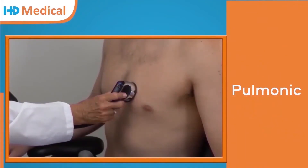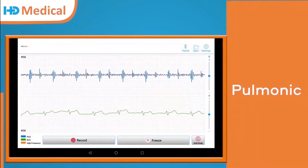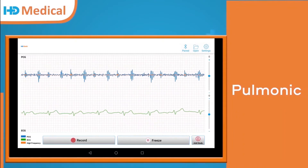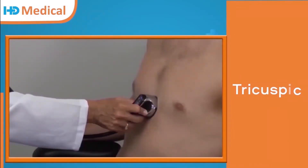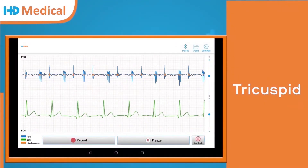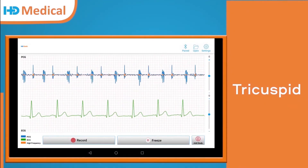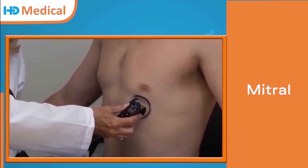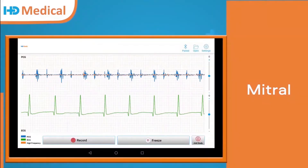Now we are measuring for the pulmonic position. This is the pulmonic waveform. The third position is the tricuspid. Tricuspid waveform. This is the mitral position. Mitral waveform.